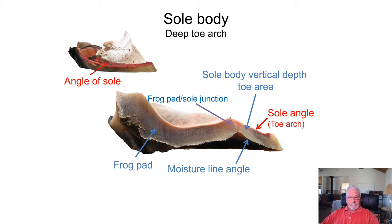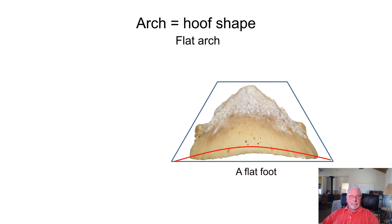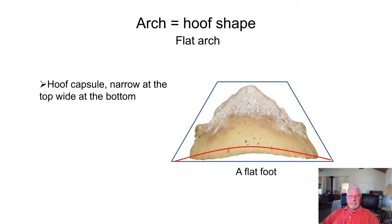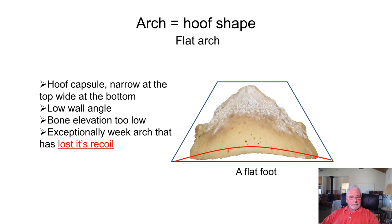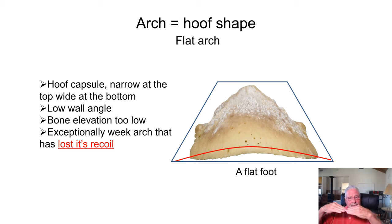An arched hoof shape with a flat foot: hoof capsules are narrow at the top and wide at the bottom, with a low wall angle and bone elevation too low. An exceptionally weak arch has lost its recoil. Recoil is something we should dedicate our work to — it's protecting the recoil of the sole body. When body weight stands on top of the sole, the sole flexes down. And when the horse is in exercise, the sole will press even harder with more flexion. The heavier the body weight and the faster the speed, the more flexion in the sole body.